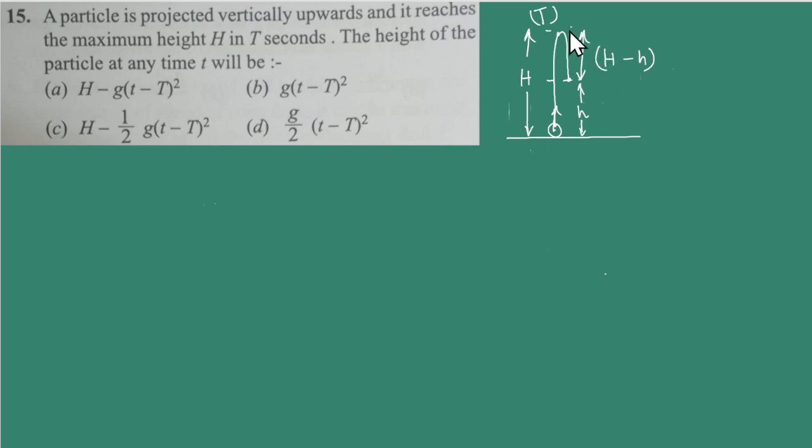And if we are calculating this distance from the topmost point, it should be equal to 1 by 2 g (t minus capital T) whole square. Half g t square because if we are just releasing particle from the maximum height, so the initial velocity is equal to 0 at the highest point.